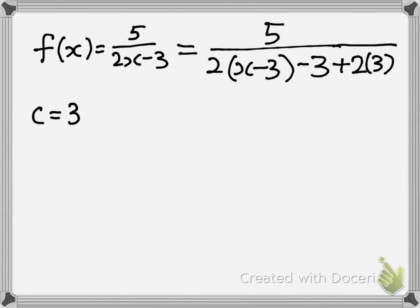And then now you know this is really 5 over—this is 6 minus 3—3 plus 2 times x minus 3.